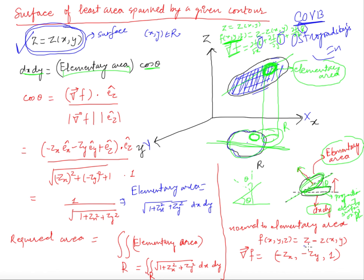For this surface F(x,y,z) = z - z(x,y), the differentiation with respect to x is -∂z/∂x. So the gradient components are: x-direction: -z_x, y-direction: -z_y, and z-direction: ∂F/∂z = 1. This is the direction of the normal to the elementary surface. The normal to the XY plane is k̂.